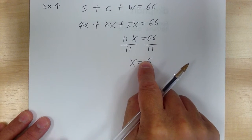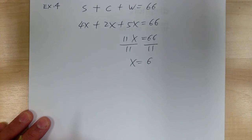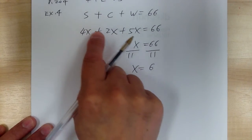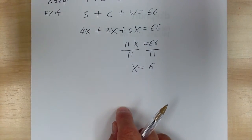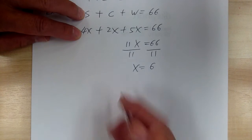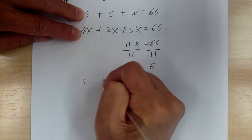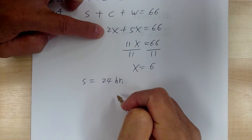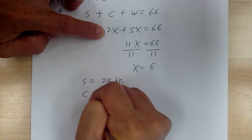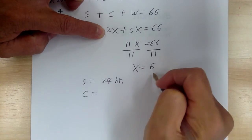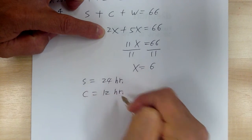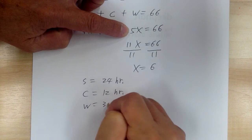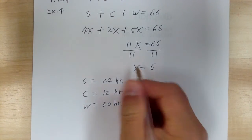They ask for the number of hours in each activity. Study is 4x = 24 hours. Class is 2x = 12 hours. Work is 5x = 30 hours.